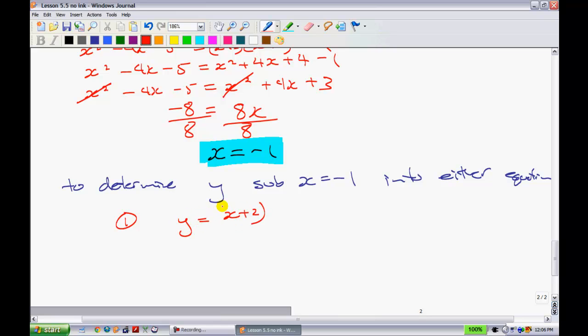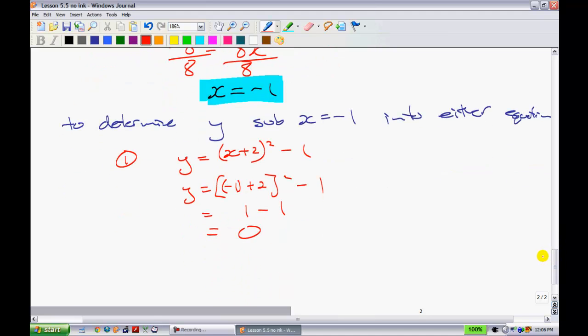When you substitute that in, you get y equals (negative 1 plus 2) all squared minus 1. Negative 1 plus 2 is 1. 1 squared is 1. We have 1 minus 1 equals 0. And so, we found out that your solution now, when you combine the two highlighted blue regions, you get a solution at (negative 1, 0).